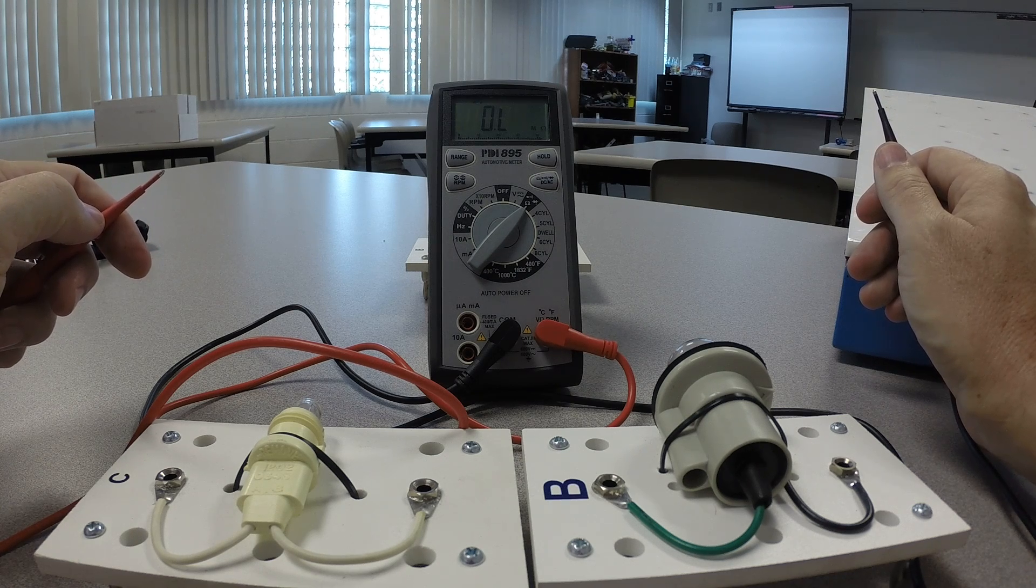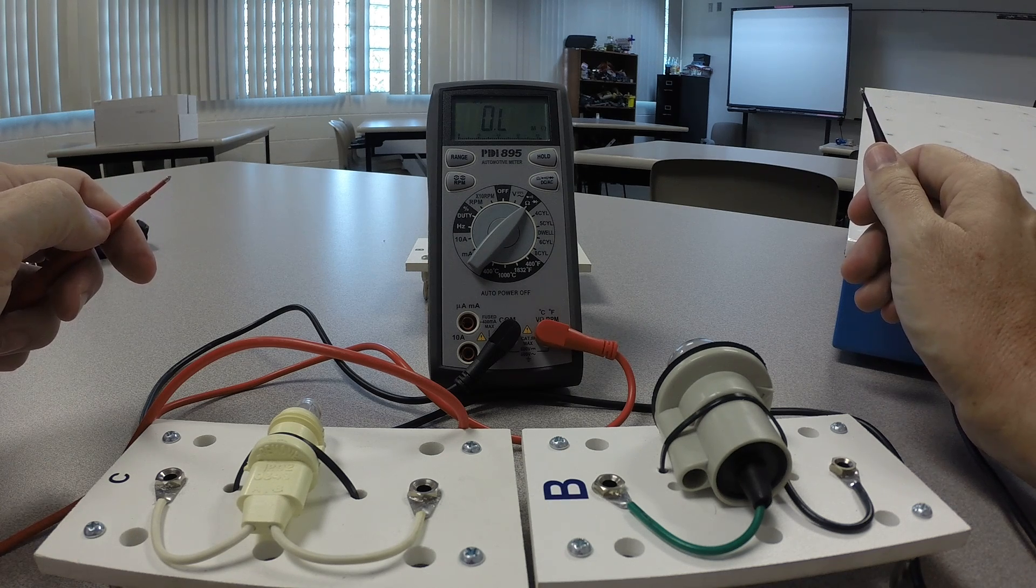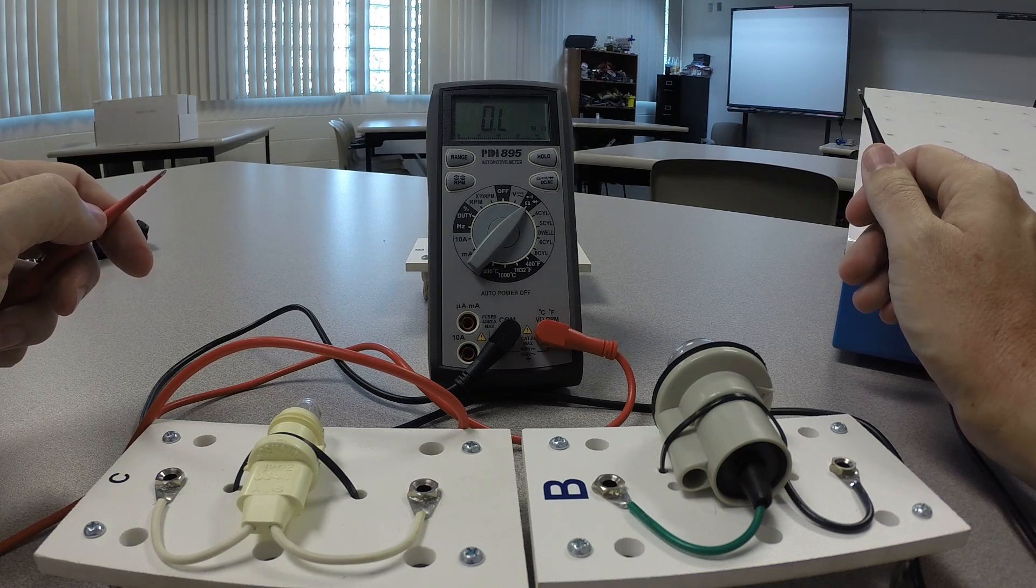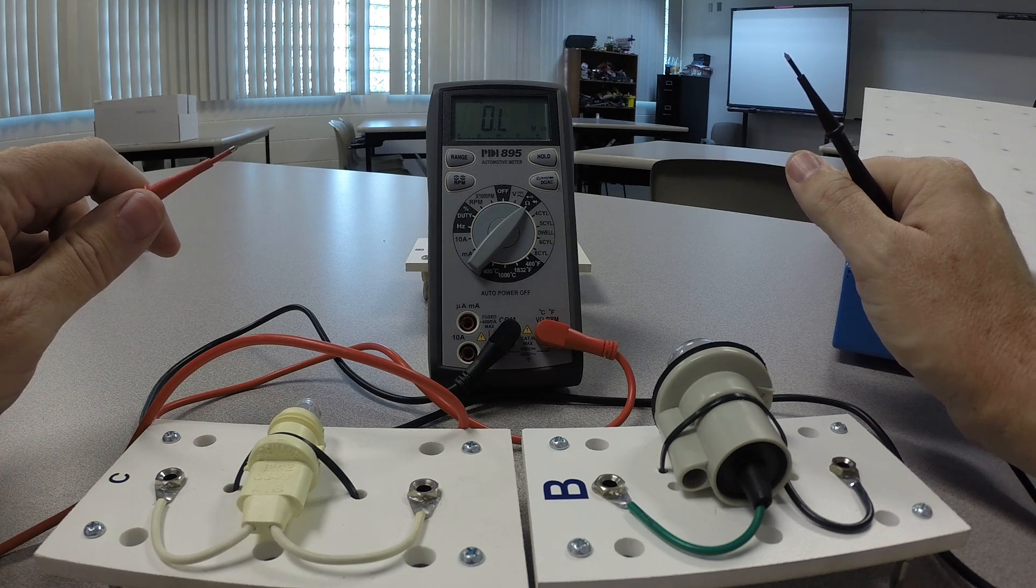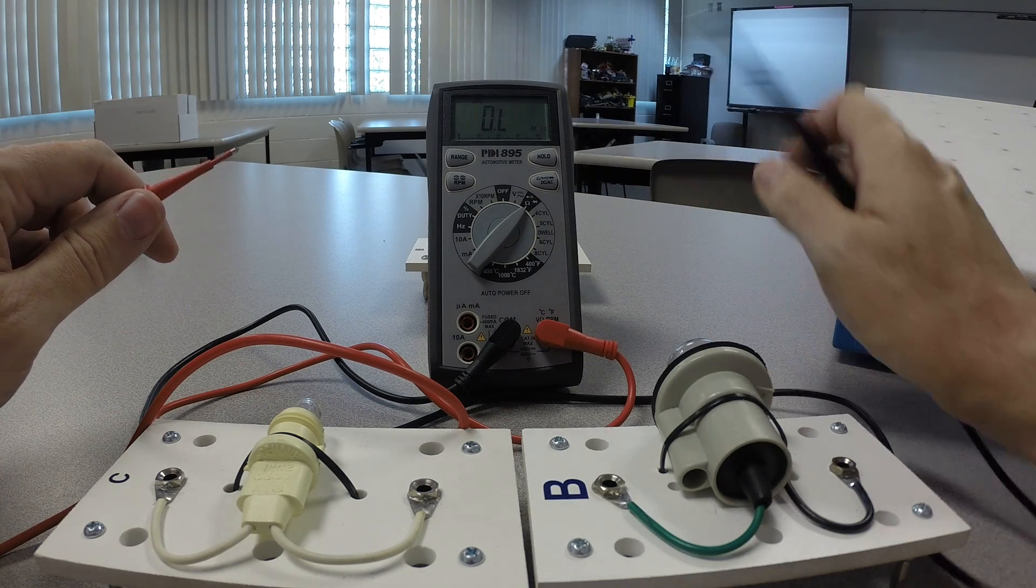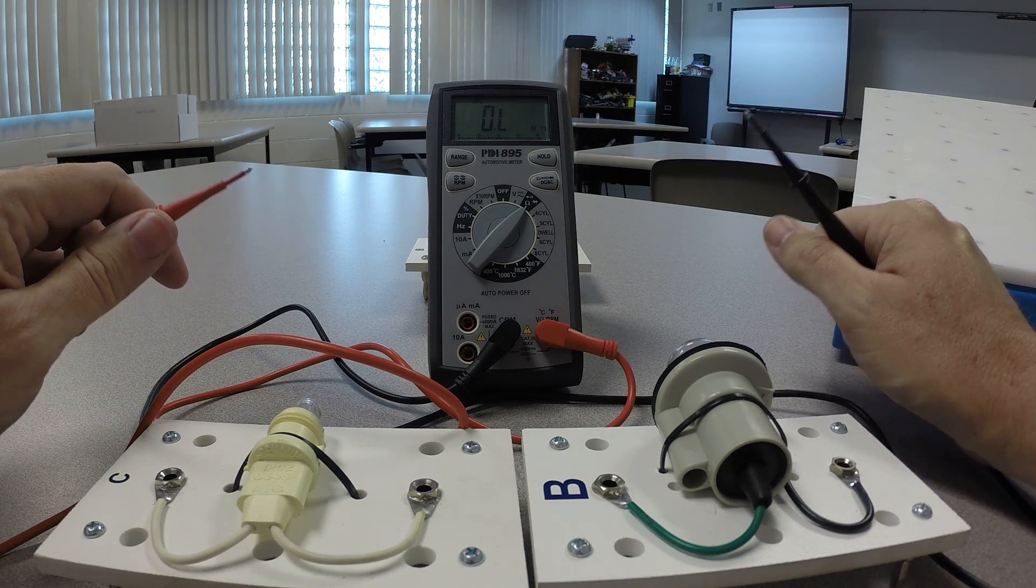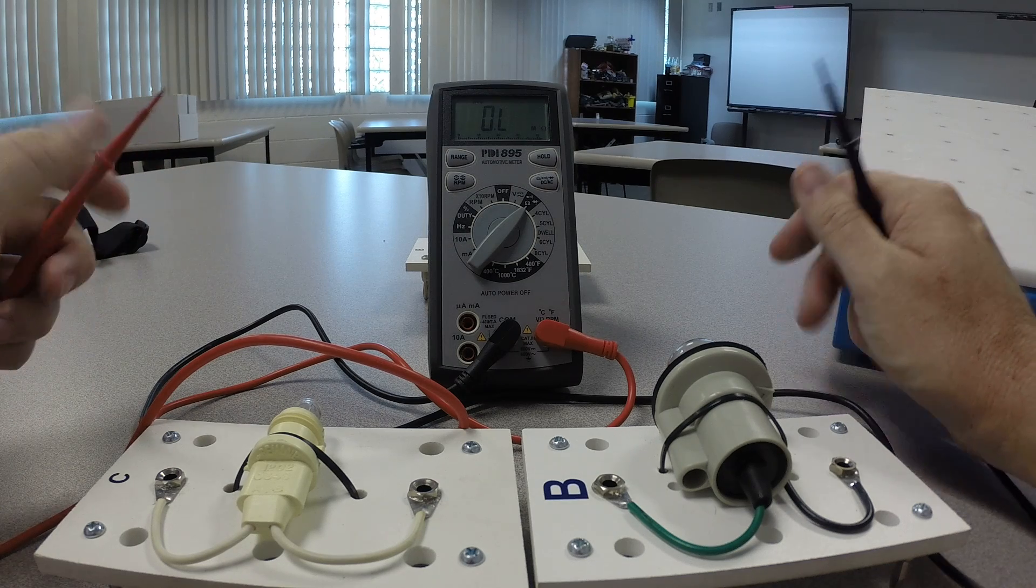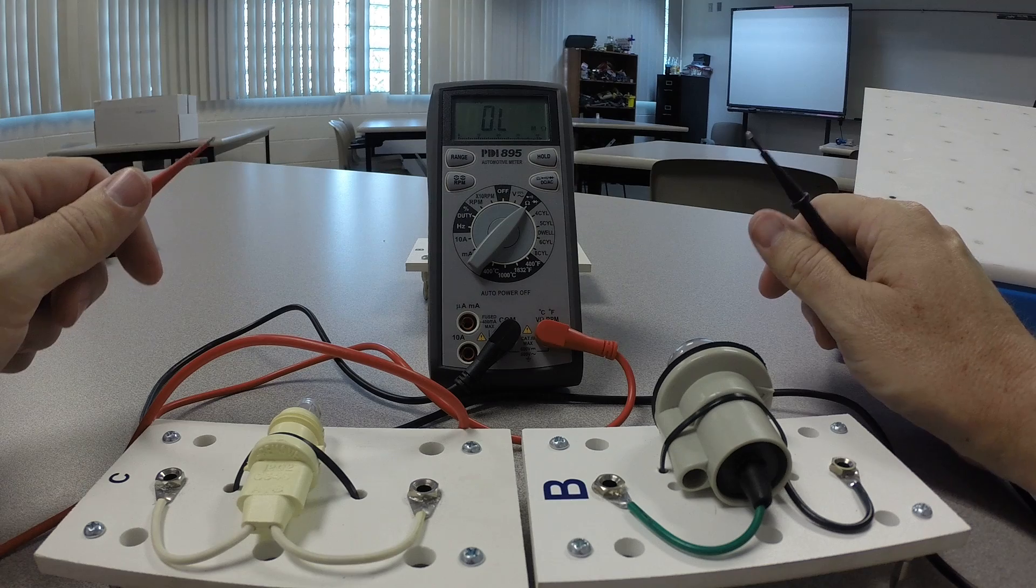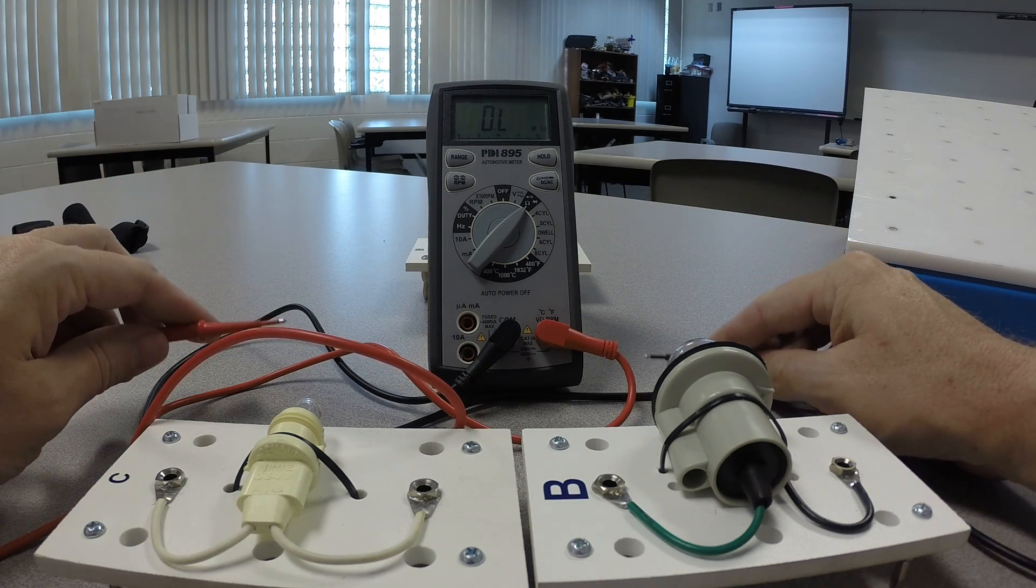And when you have that much resistance in any kind of electrical circuit, chances are the circuit's open. The current from the little meter might actually be finding a way back to where it came from. So we do get a reading on the display in megaohms. But a megaohm reading is essentially the same as an OL reading. There's really not too much difference there.